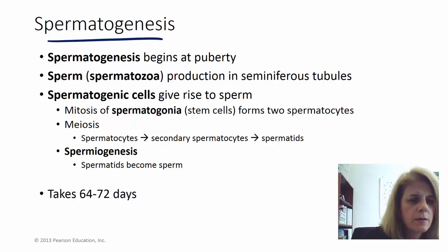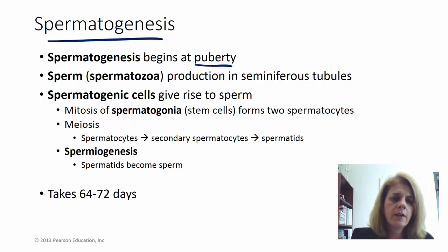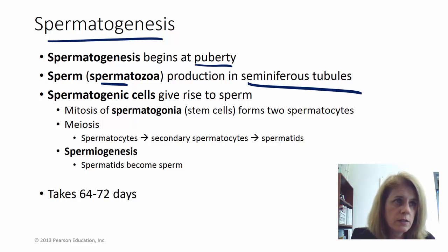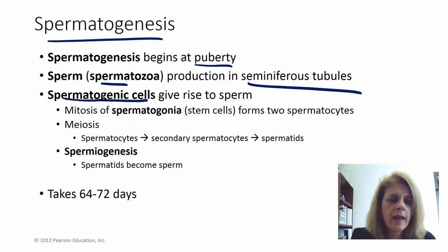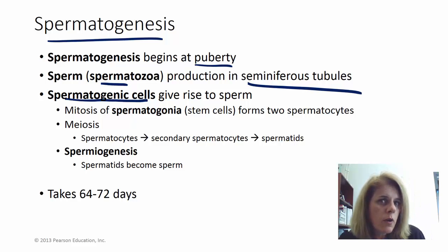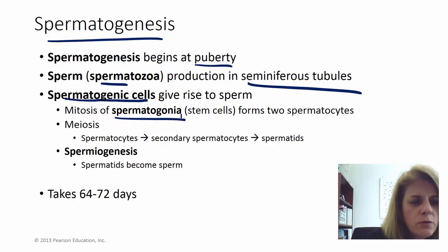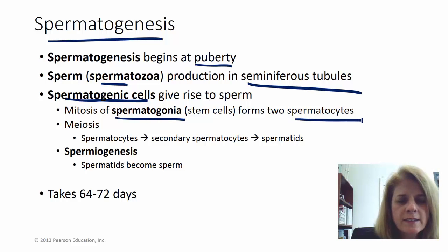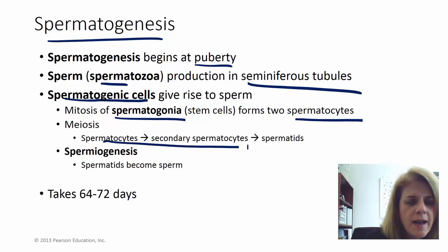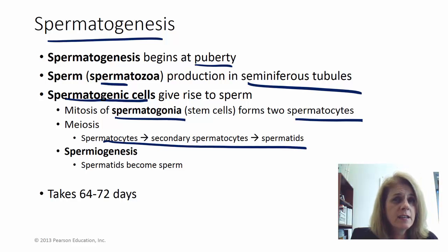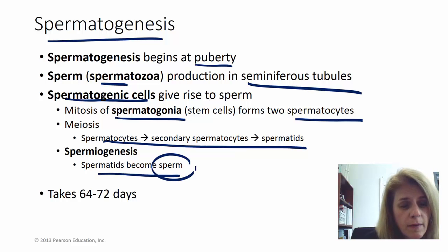Spermatogenesis begins at puberty, and the goal is to make sperm, or spermatozoa, occurring in the seminiferous tubules. You start with a stem cell called a spermatogenic cell. There are actually two processes: first, mitosis of these stem cells gives you spermatocytes; those spermatocytes then undergo meiosis to become spermatids; and those immature sperm undergo spermiogenesis to become actual sperm.